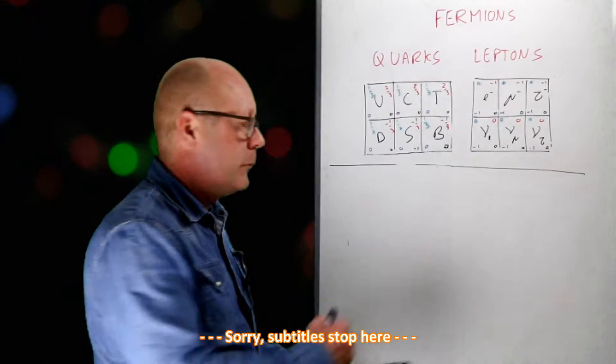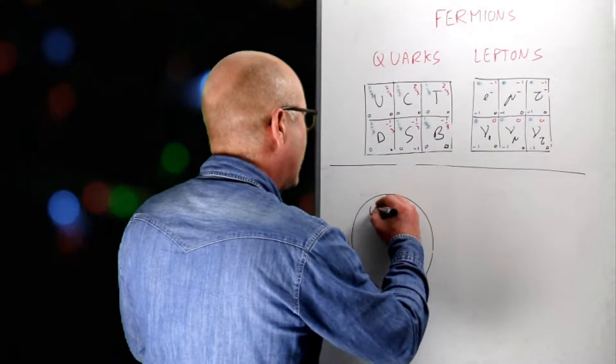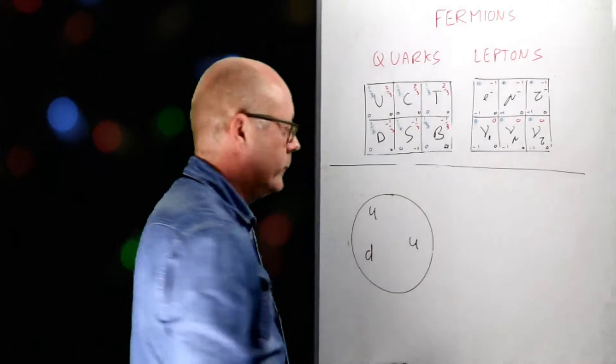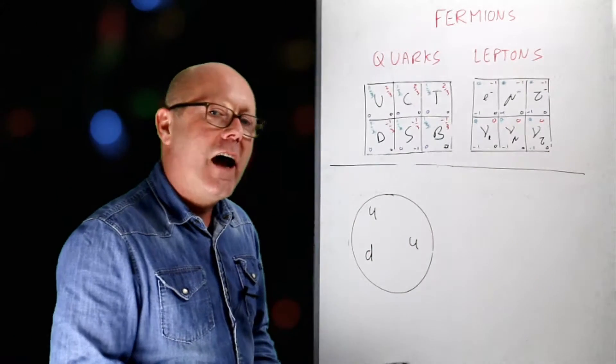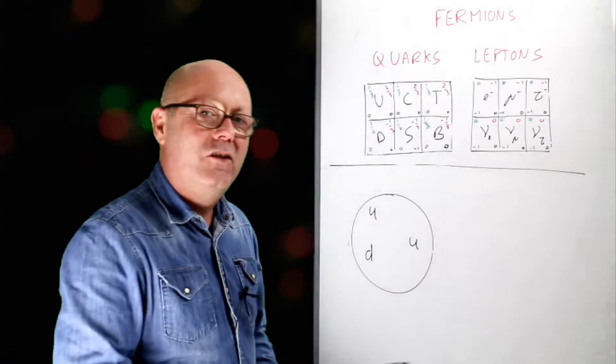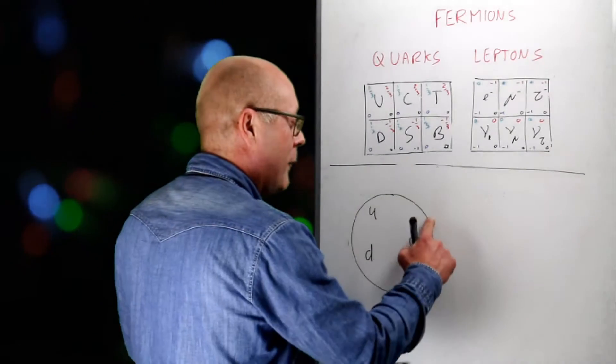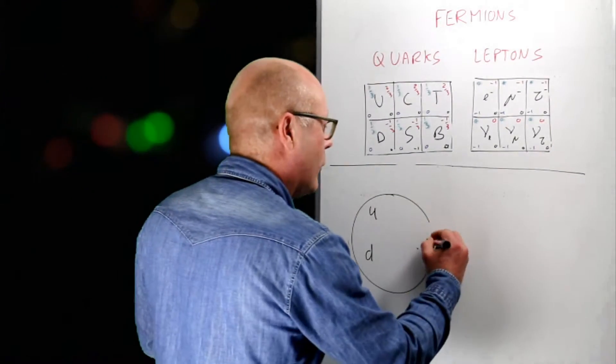Let's make a proton. An up quark, an up quark and a down quark. And I'm going to be cruel to it. I'm going to try to remove one of its up quark. I'm going to pull on it. So I'm applying a force on this up quark and starting to distort my proton.